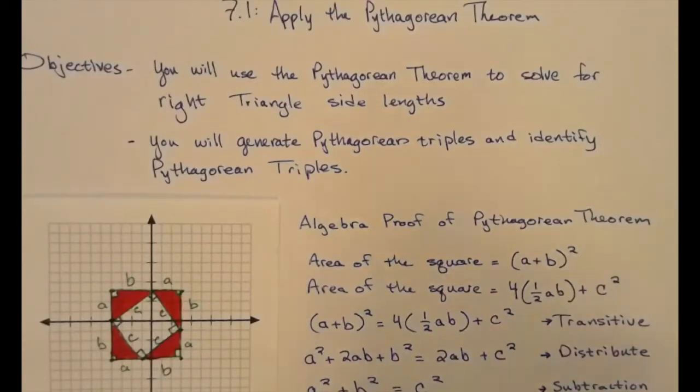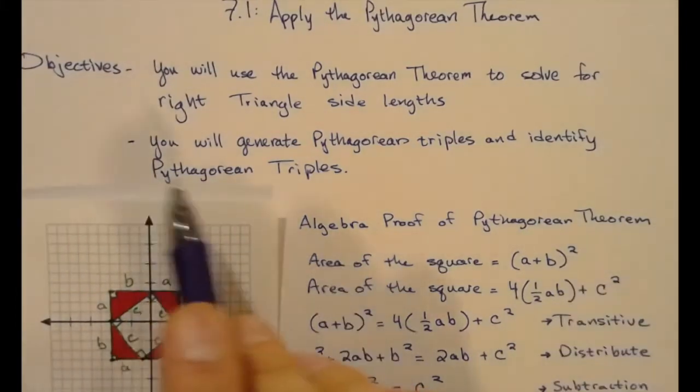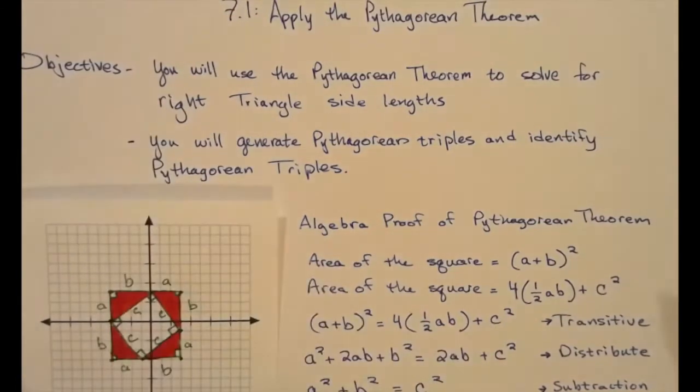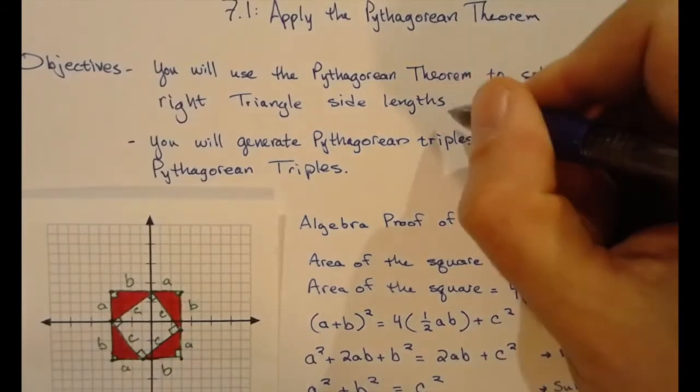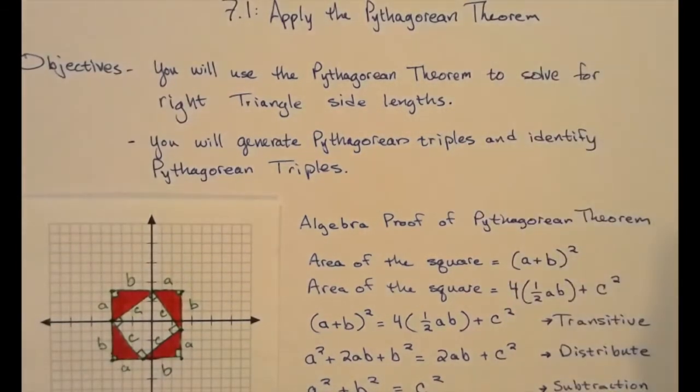Alright, so in section 7.1 we're going to look at the Pythagorean Theorem. Now I know we've used it before but we're going to amp up the sophistication a little bit. So the objectives for this lesson, we're going to use the Pythagorean Theorem to solve for right triangle side lengths and we're going to generate and identify Pythagorean triples.